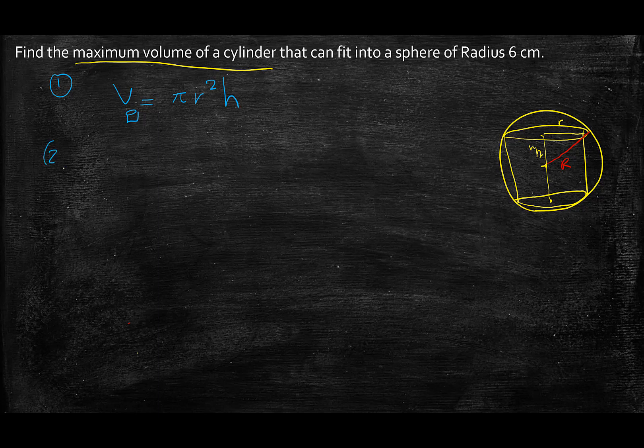Now the second part in doing an optimization problem is to write that first equation in terms of only one variable, either in terms of only r or h. In order to do that, I have to use what's given in the actual equation to rewrite this in terms of only one variable, because when I take the derivative I can't have the equation in terms of more than one variable.